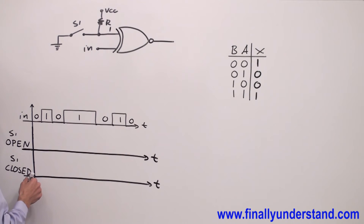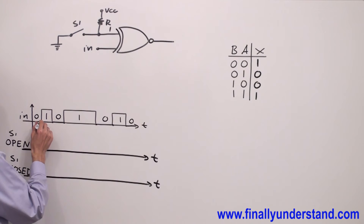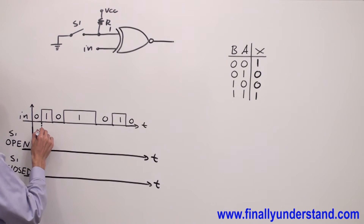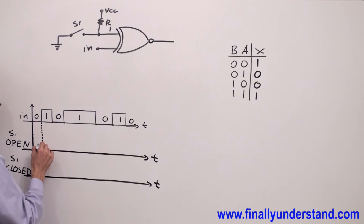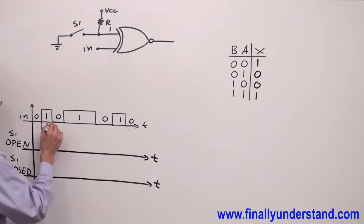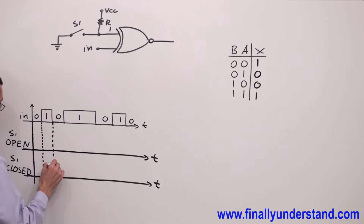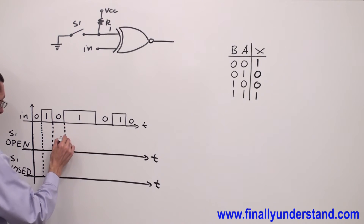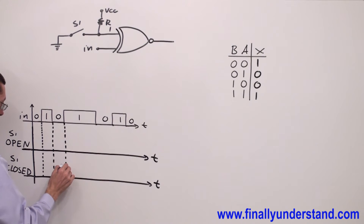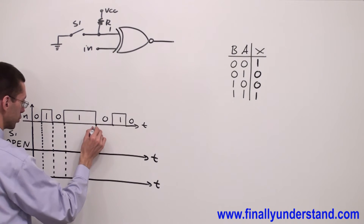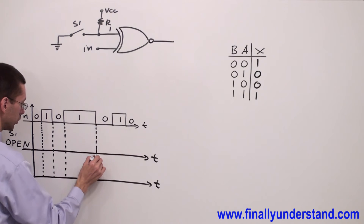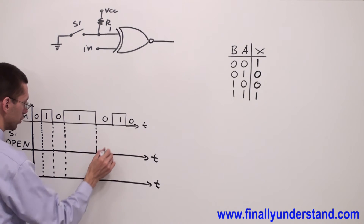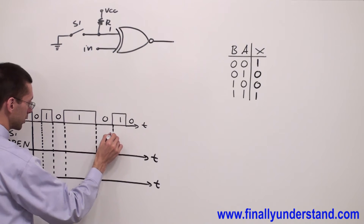Next, I'm supposed to draw the dashed line at every single change of my input waveform. Anytime you are going to notice a transition from 0 to 1 or 1 to 0, I'm supposed to draw the dashed line.